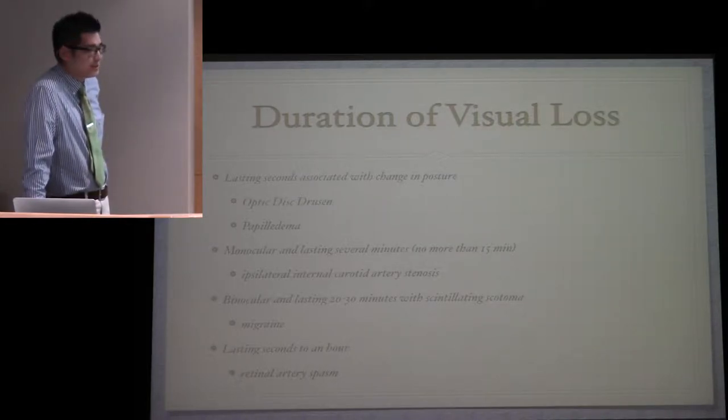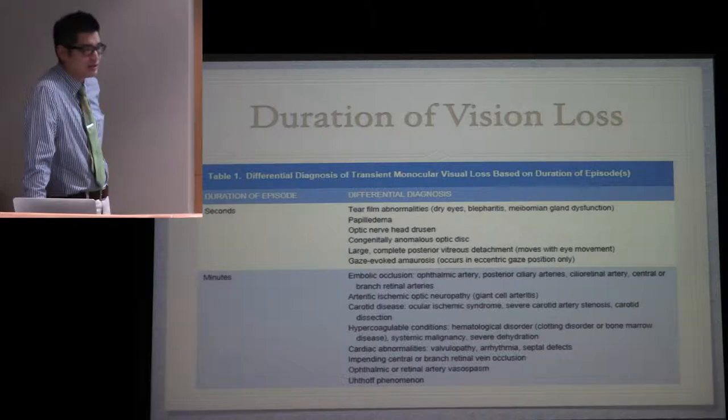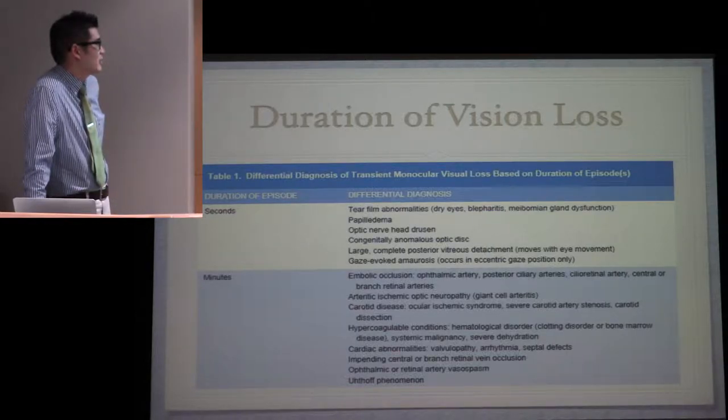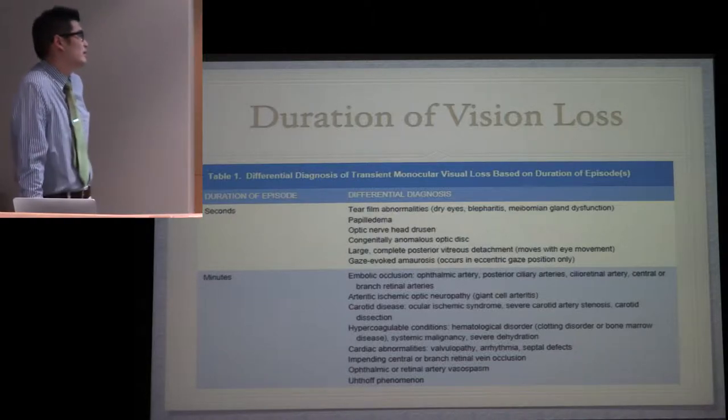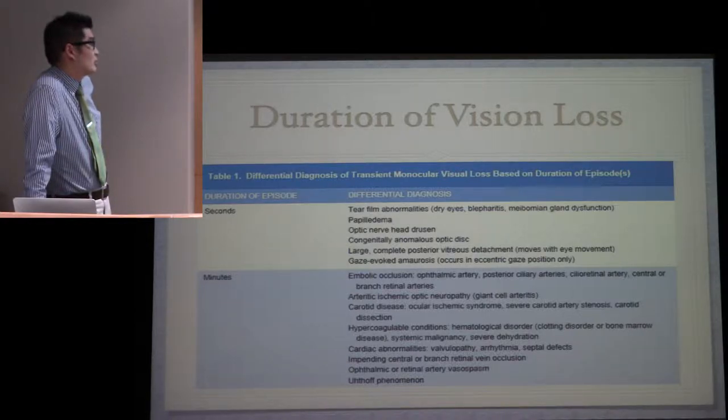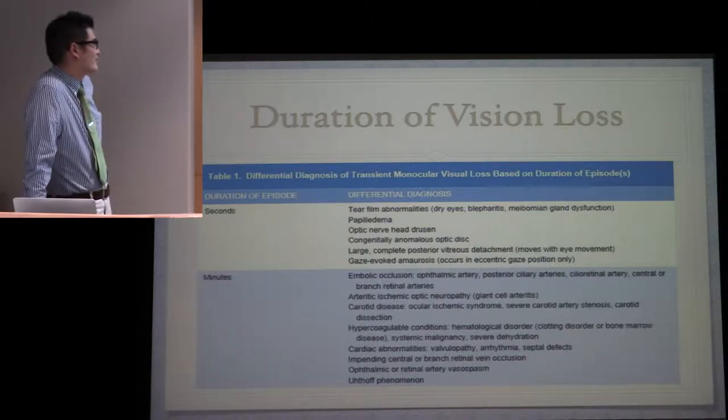Here's a good chart for your differential depending on how long the vision loss lasts. If it happens for a couple seconds, think about tear film abnormalities, papilledema, optic nerve drusen, congenital anomalies of the disc. Think about a large PVD, especially if it moves with eye movement, as well as gaze-evoked amaurosis.